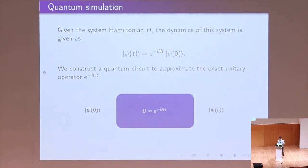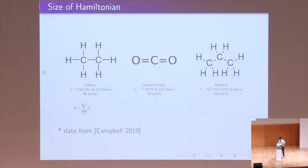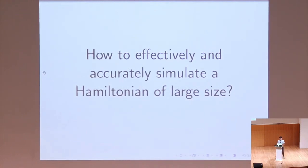Here is a general picture of quantum simulation. We are given the system Hamiltonian H, and if we want to get the state at time T, we need to implement an evolution operator — exponential minus iHT — onto the initial state. Because of the non-commuting property of the Hamiltonian, we need to construct a quantum circuit to approximate the exact unitary operator. In the practical case, I list three different chemical compounds and the number of terms in their Hamiltonians and their required qubits. As you can see, when we consider molecules with complex structures, the effective Hamiltonian becomes very complex and the number of terms becomes very large.